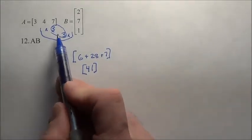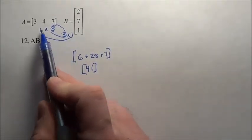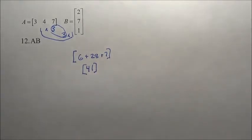Remember, the inner numbers must match. The outer numbers will tell you what type of matrix answer you're going to have. And we did. We had a one by one matrix answer. In this case, it was 41.